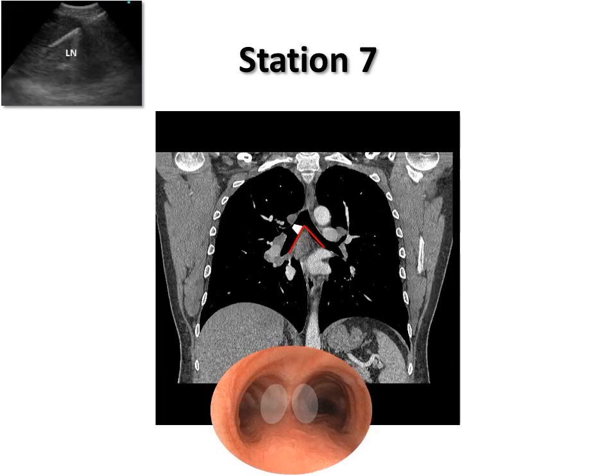To visualize station 7, the eBus scope is positioned either at the proximal right or left main stem bronchus with the transducer oriented medially. Here the eBus scope is positioned at the proximal right main bronchus.